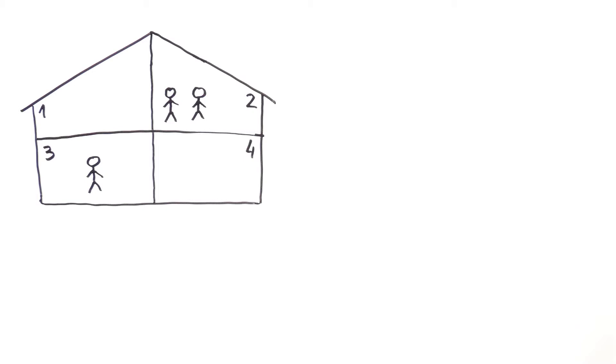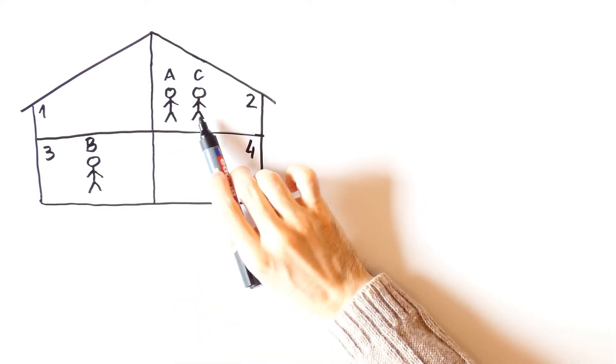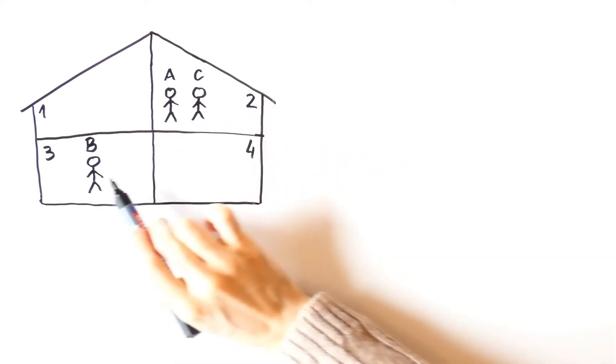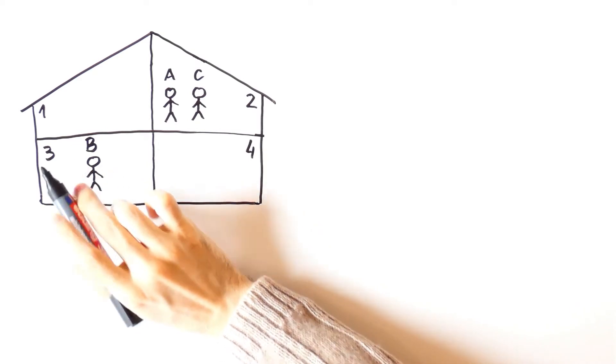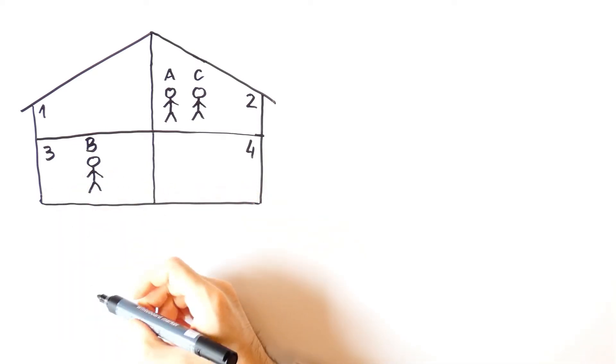And suppose that there are three people inside the house. Let's call them person A, person B and person C. Person A and person C are in room 2, while person B is in room 3. We can represent that in the following way.